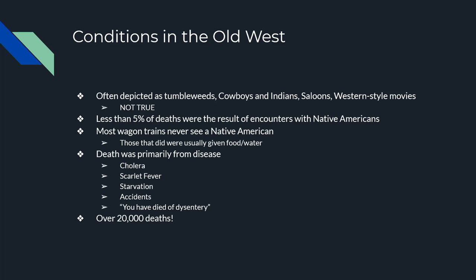You may have seen movies about the Old West with cowboys and Indians, shootouts, and people drinking in saloons — but none of that is really true. In fact, less than 5% of all deaths out West were the result of Native Americans. It was very unlikely for a wagon train to even see a Native American, and if they did, more often than not they were offered assistance in the form of food or water. What was real about the West was death and disease: cholera, scarlet fever, accidents, starvation. There are over 20,000 documented deaths of people moving West at this time.